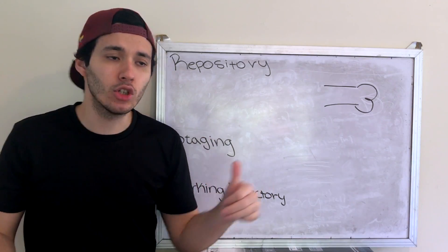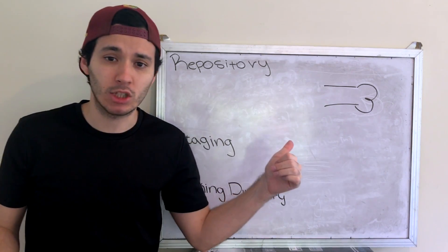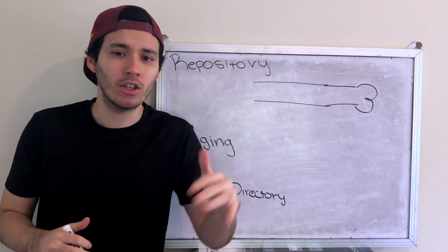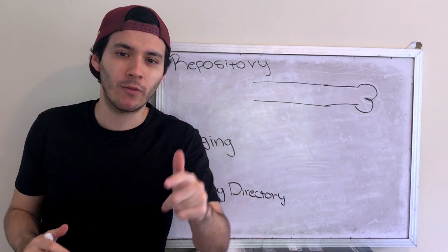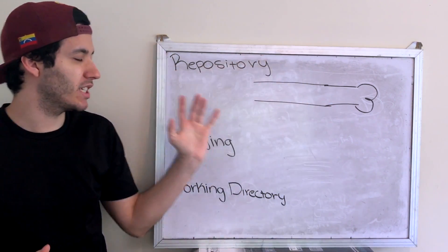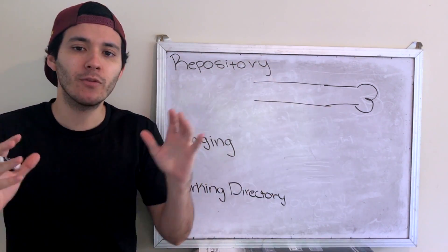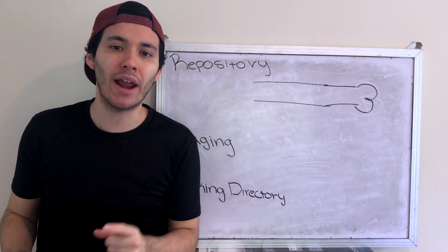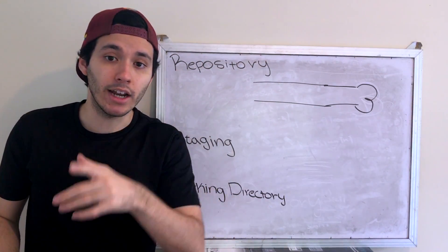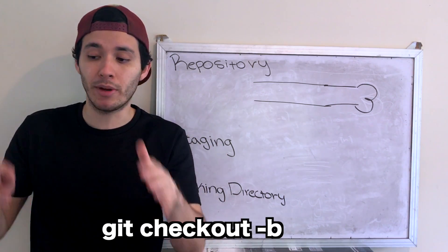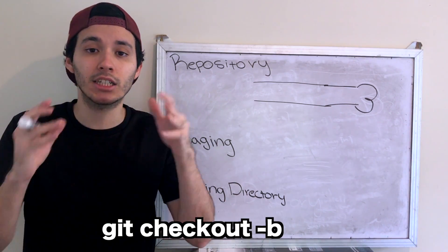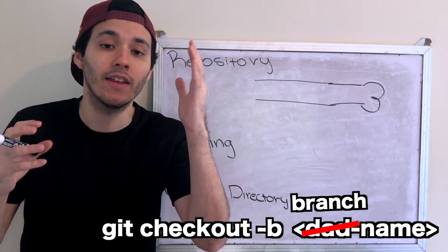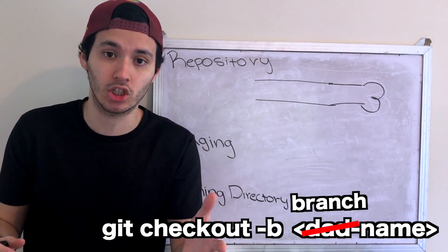You can do that as many times as you want. Now let's pretend you want to work on a specific feature without damaging the main line — you have to use something called branches. To create a new branch, you use the command git checkout -b plus the name of the branch.